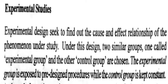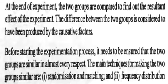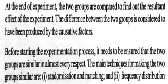C. Experimental Studies. Experimental design seeks to find out the cause and effect relationship of the phenomenon under study. Under this design, two similar groups — one called the experimental group and the other the control group — are chosen. The experimental group is exposed to a pre-designed procedure while the control group is kept constant. At the end of the experiment, the two groups are compared to find out the resultant effect. The difference between the two groups is considered to have been produced by the causative factor. Before starting the experimentation process, it needs to be ensured that the two groups are similar in almost every respect.